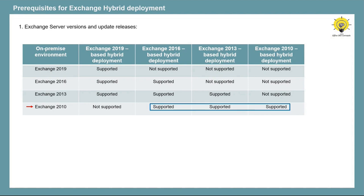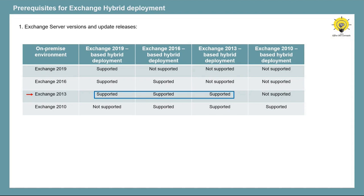You can also have other versions installed along with Exchange Server 2010, like Exchange 2013 and 2016, and you can use one of these servers for Hybrid deployment. Similarly, if you have Exchange 2013 in your on-premise environment, you can make any one of those three Exchange servers a Hybrid Server, but you cannot use Exchange 2010 for Exchange Hybrid deployment if you have Exchange Server 2013.